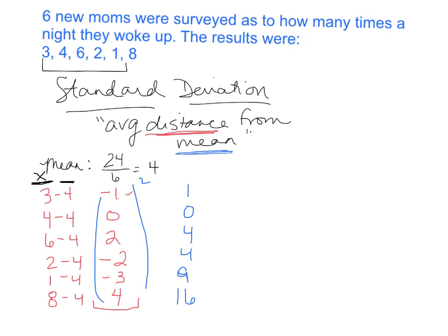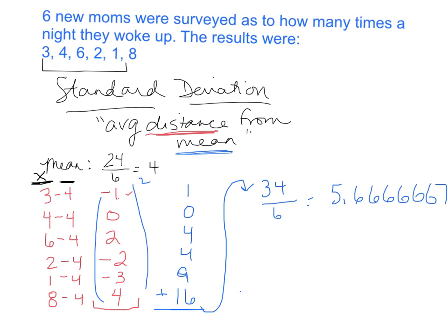Now I find the average of the squares by adding this list together, and I get 34. There are six of them, so I divide by six. That gives me 5.6666..., which I round to the nearest hundredth. I look at the digit directly to the right — if it's five or greater, it bumps up — so I get 5.67. That is the average in squared world; these are still the squared numbers.